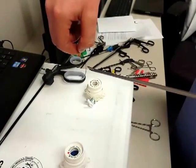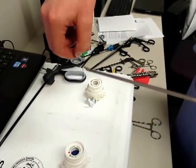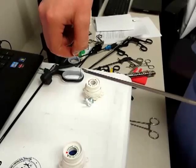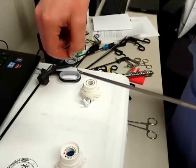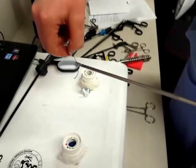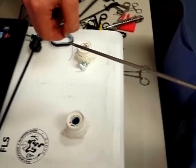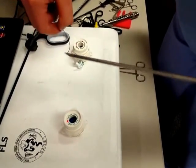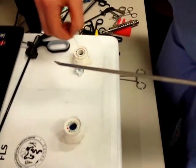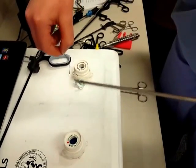For this exercise, the intracorporeal knot, we recommend that you start by setting the needle into the non-dominant needle driver in such a fashion that it will be easier to load once it is introduced into the box. In order to do this, hold the needle driver in your non-dominant hand at the angle at which it will enter the box.